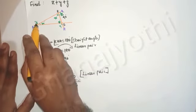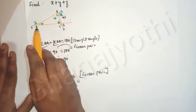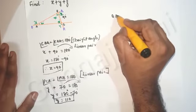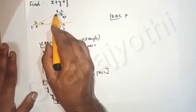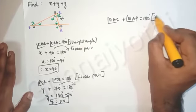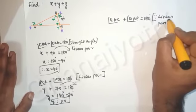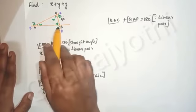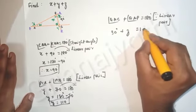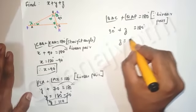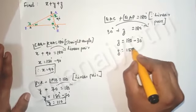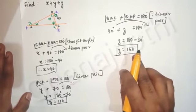Now let us find the value of z. Taking two angles: angle QAC plus angle QAP is equal to 180 degrees, because of a linear pair. We know angle QAC is equal to 30 degrees, and angle QAP is equal to z. So 30 plus z equals 180 degrees. Transposing 30 degrees to the right hand side, z is equal to 150 degrees.